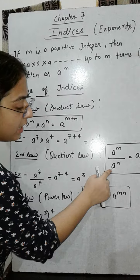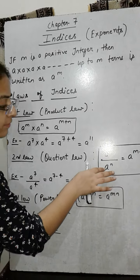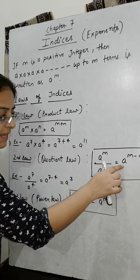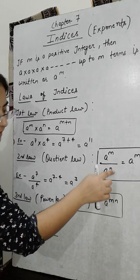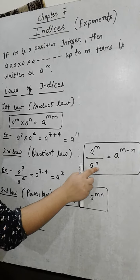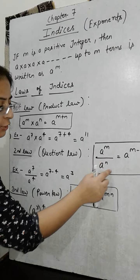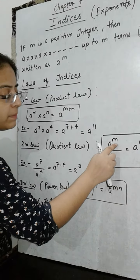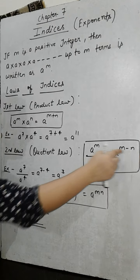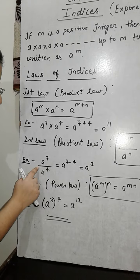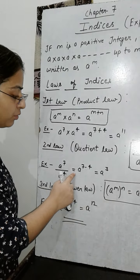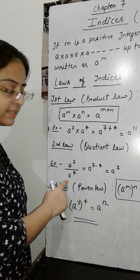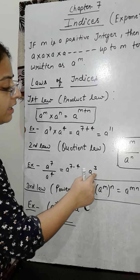The second law is the Quotient Law. This law says that when two terms are divided — one term by the other — such that their bases are the same and powers are different, the base will remain the same and the powers will be subtracted. The numerator's power minus the denominator's power. So a raised to the power m divided by a raised to the power n equals a raised to the power m minus n. For example, a raised to the power 7 divided by a raised to the power 4 equals a raised to the power 7 minus 4, that is a raised to the power 3.